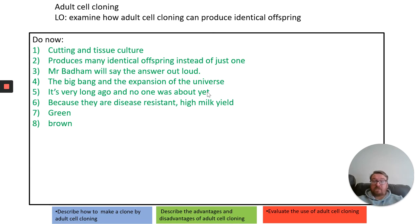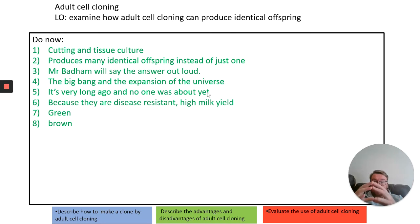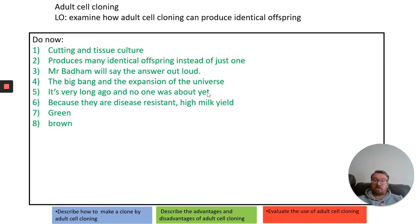For embryo transfer, you begin by giving the animal you are interested in fertility hormones to stimulate her to produce lots of eggs. You collect those eggs and artificially inseminate them, then allow one to develop to an embryonic stage. You take cells from that initial embryo to grow identical offspring, implant them into a surrogate mother, and she gives birth to young that are identical to the biological mother, not the surrogate.